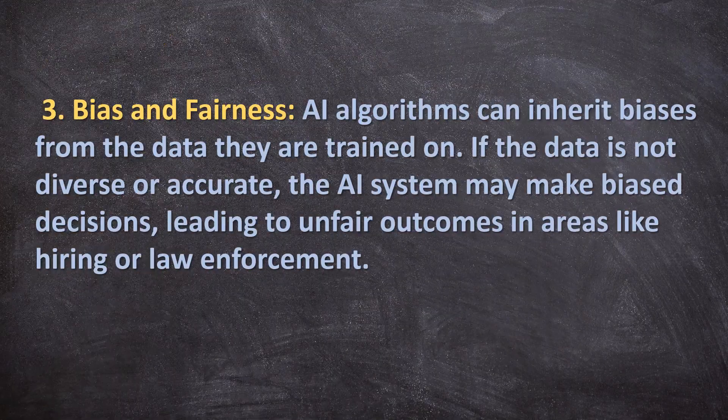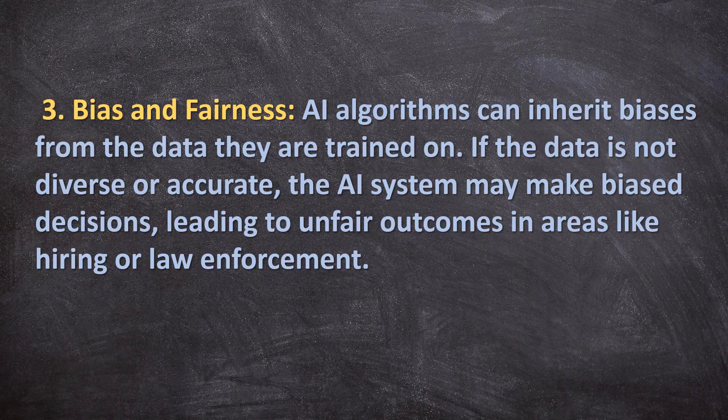Third is bias and fairness. AI algorithms can inherit biases from the data they are trained on. If the data is not diverse or accurate, the AI system may make biased decisions, leading to unfair outcomes in areas like hiring or law enforcement.